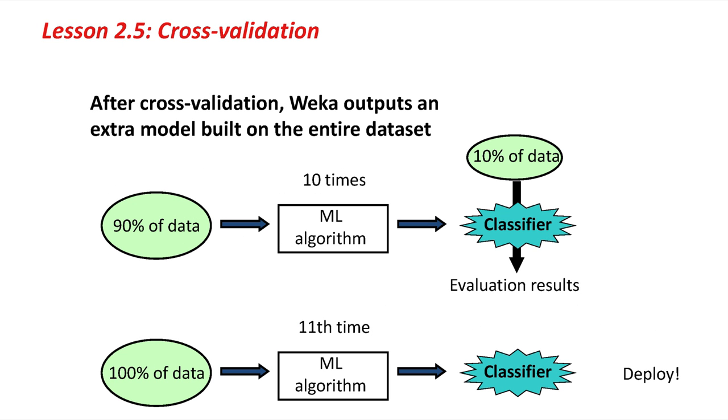Then, once we've done the cross-validation, what Weka does is run the algorithm an eleventh time on the whole data set. That would then produce a classifier that we might deploy in practice. We use 10-fold cross-validation in order to get an evaluation result, an estimate of the error, and then finally we do classification one more time to get an actual classifier to use in practice.